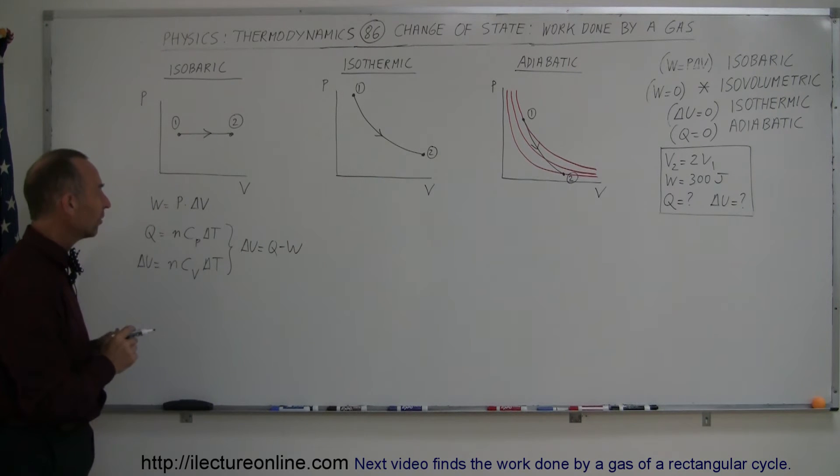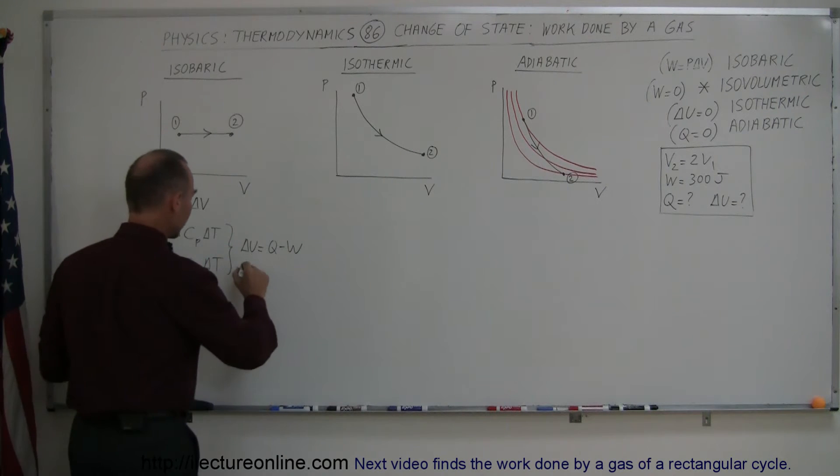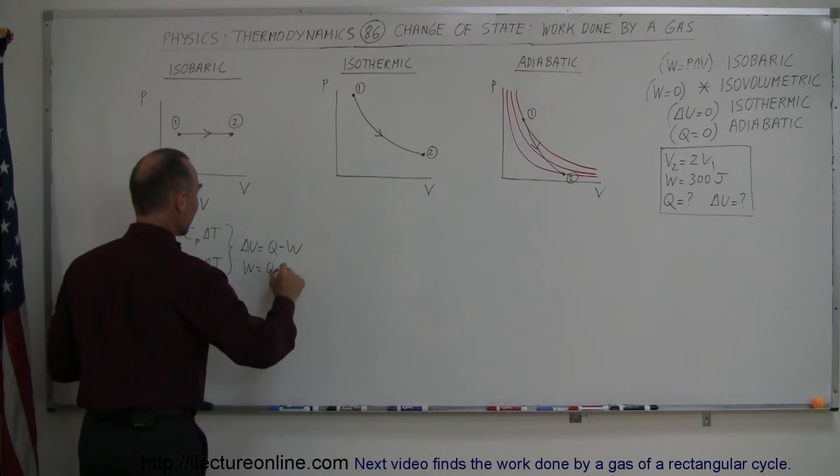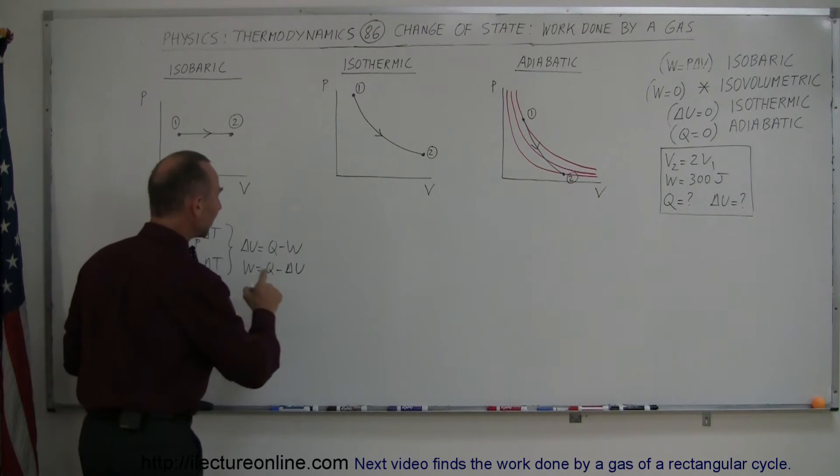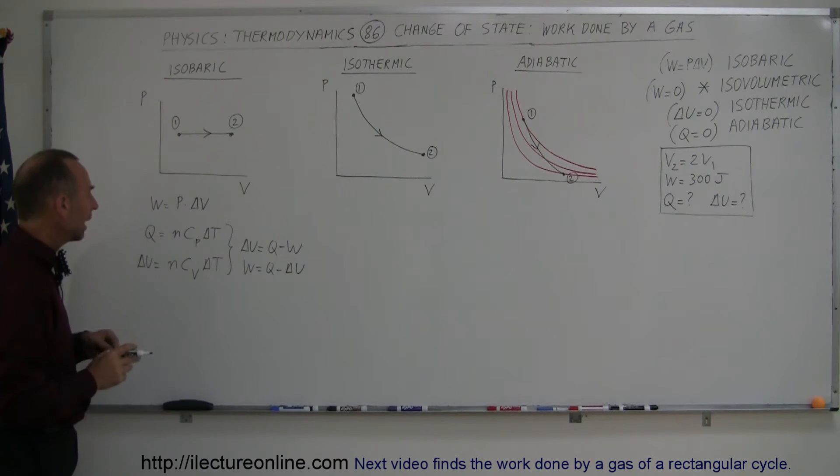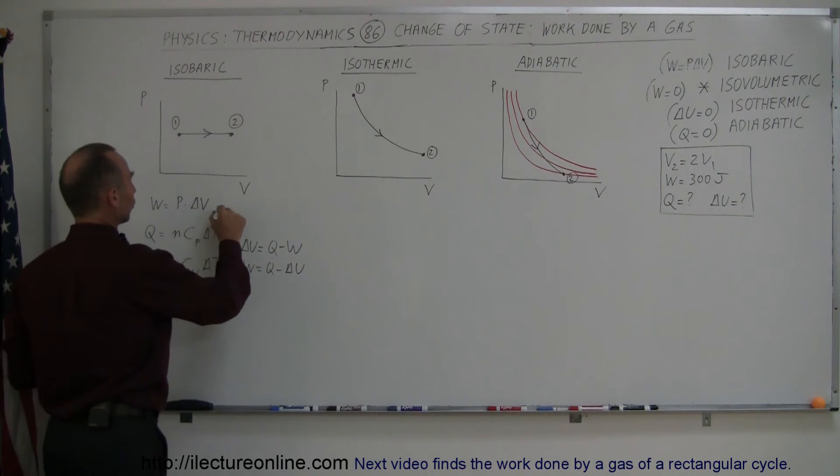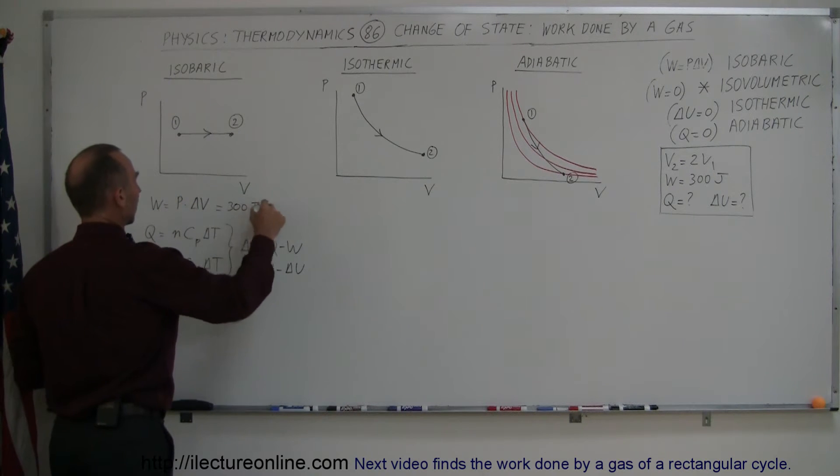So what that means is that W, if I solve this for W, W is equal to Q minus delta U. W is the difference between those two and we know what that is. We know that that was equal to 300 joules.